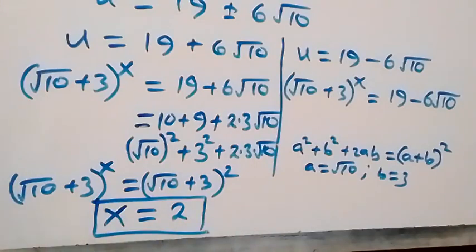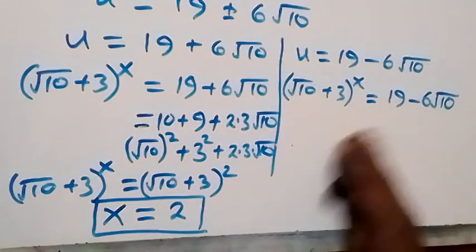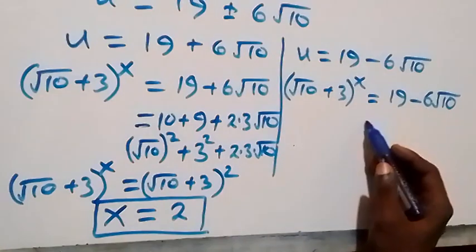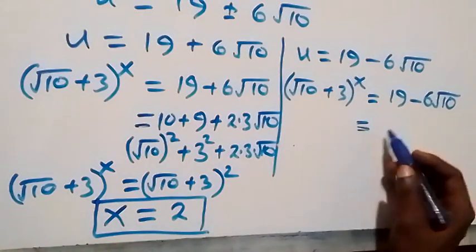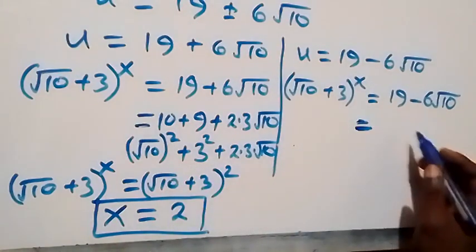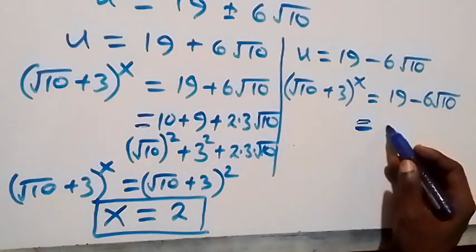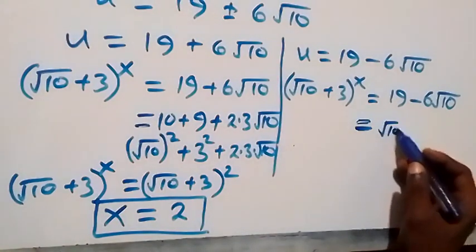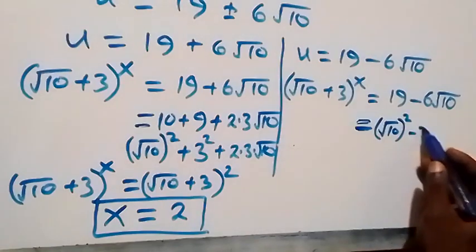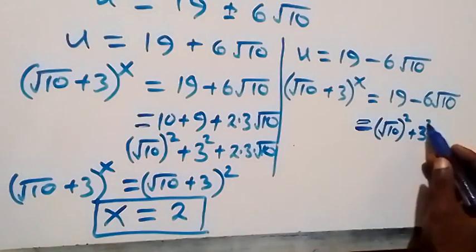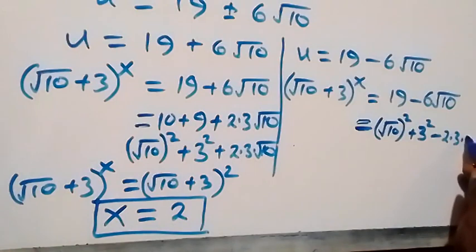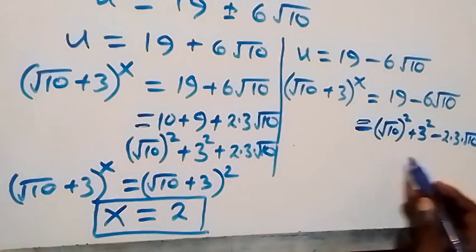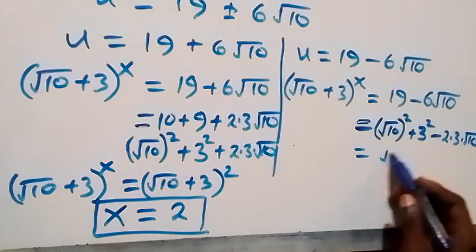Also in the same way, from the second case — the only difference is that we have minus. This can now be written as (root 10) squared minus 2 times 3 times root 10 plus 3 squared.